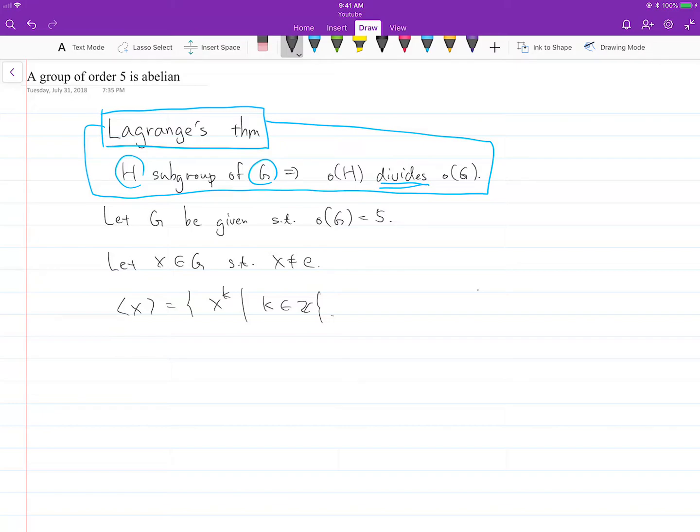Basically, you're just raising X to the power of something, where something can be any integer. We know that this has to be a subgroup of G.